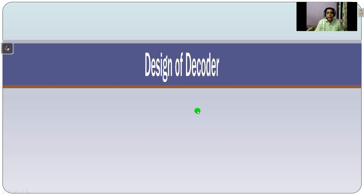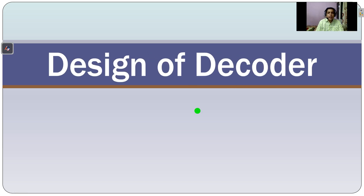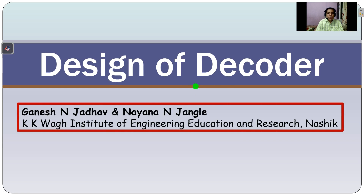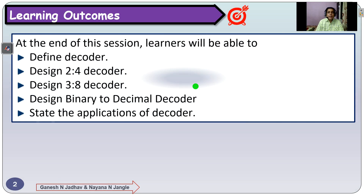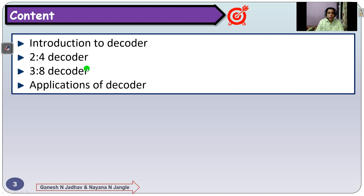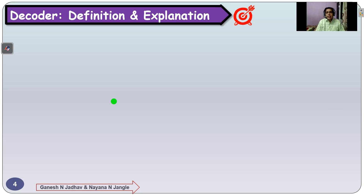Welcome to the next video on analog and digital electronics — the design of decoder circuits. Myself Ganesh and Naina present the design of decoders, from KKWAG Institute of Engineering Education and Research, Nashik. The learning outcomes of today's session: the learner will be able to define decoder, design a 2-to-4 decoder, design a 3-to-8 decoder, design a binary-to-decimal decoder, and state the applications of a decoder. The content for today's session is: introduction to decoder, 2-to-4 decoder, 3-to-8 decoder, and applications of decoder.